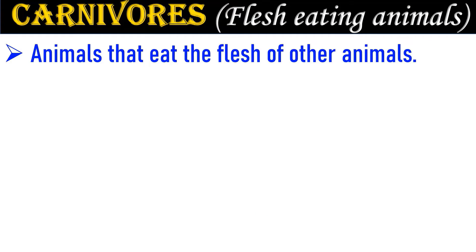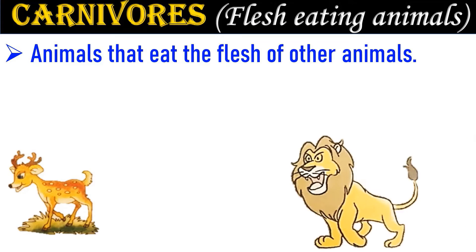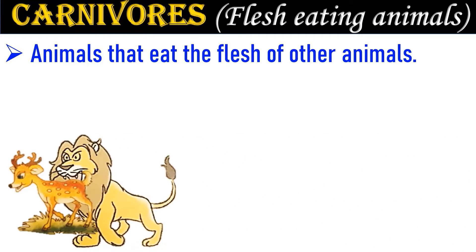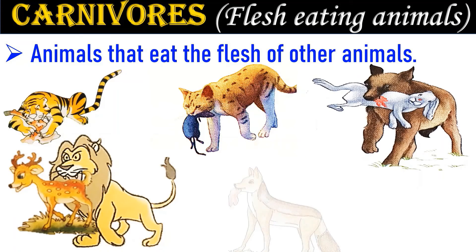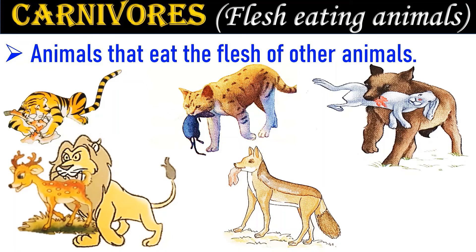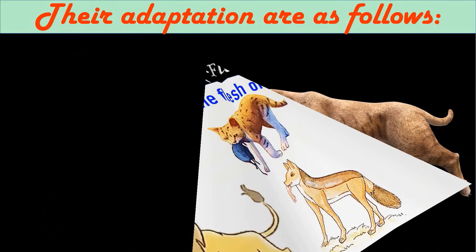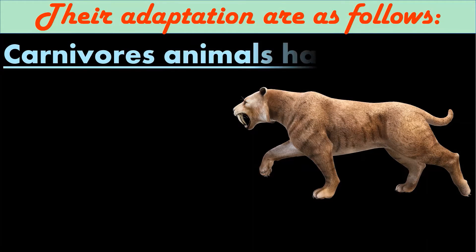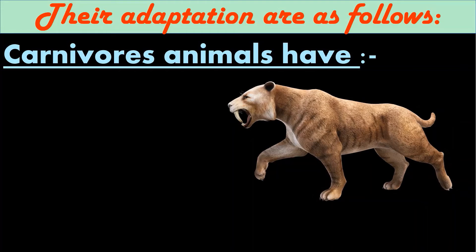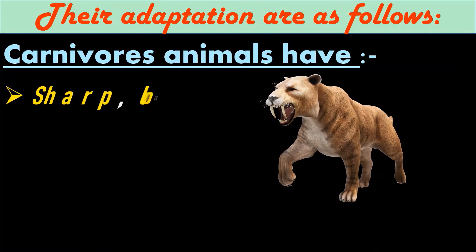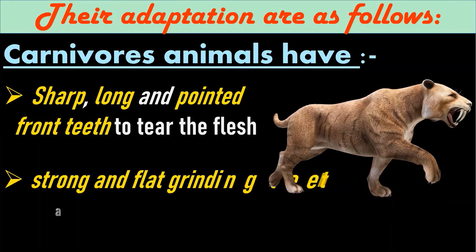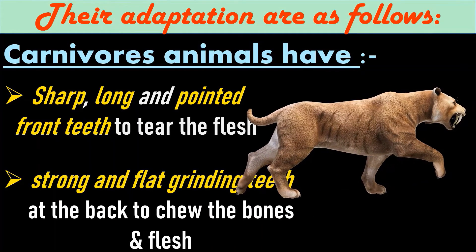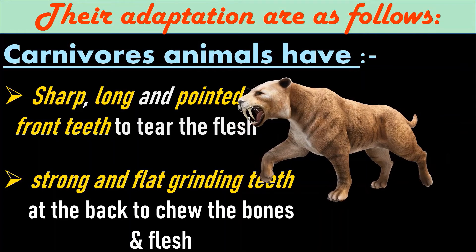Next is carnivores. Animals that feed on the flesh of other animals are called carnivores. Lion, tiger, cat, wolf and jackal are some examples of carnivores. Carnivore animals have sharp, long and pointed front teeth to tear the flesh. They also have strong and flat grinding teeth at the back to chew the bones and flesh.